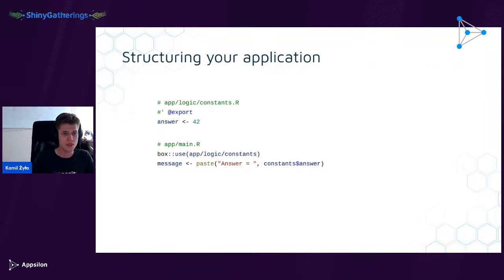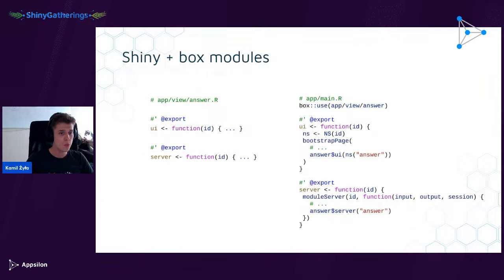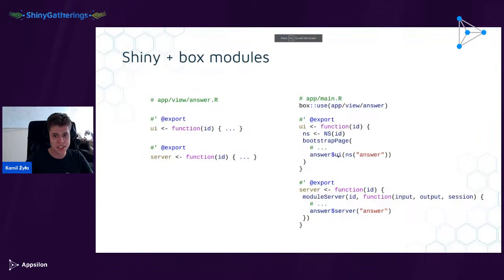This is another feature of Box: you make explicit the interface of each file — which functions can be used by other files and which cannot. Connecting Shiny modules and Box modules: create a file answer.R in app/view, define a Shiny module with a UI and server pair, mark both as exported. Then in main.R, use box::use() to import the answer module, place the UI with answer$ui(id) where you want it, and call the server function of that module.